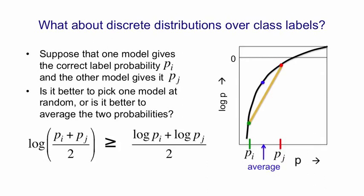That black curve is the log. On the horizontal axis, I've drawn PI and PJ, and the gold-colored line joins log PI to log PJ. You can see that if we first average PI and PJ together to get that average value where the blue arrow is, and then we compute the log, we get that blue dot. Whereas if we first take the log of PI and separately take the log of PJ, and then we average those two logs, we get the midpoint of that gold line, which is below the blue dot.